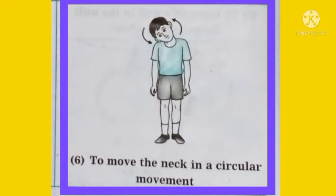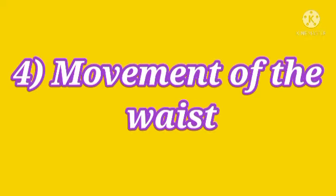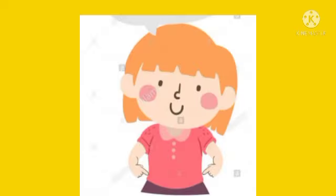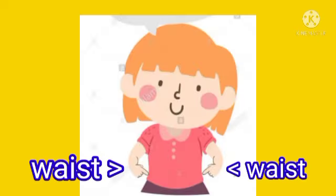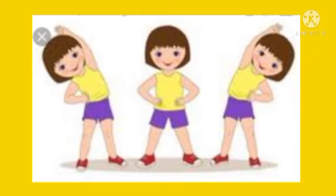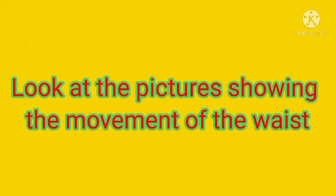Fourth point: movement of the waist. The waist is the part of the body between the ribs and hips — where you wear your belt, that portion is your waist. We move our waist to bend forward, backward, and to turn our body towards the right side and the left side. Look at the pictures showing the movement of the waist.